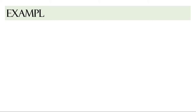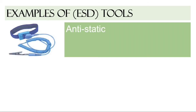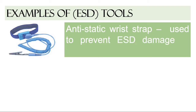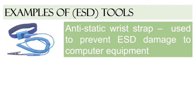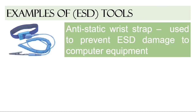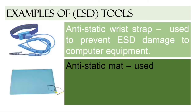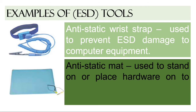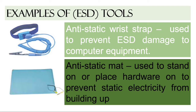Examples of ESD tools are the following. Number 1: anti-static wrist strap — this tool is used to prevent ESD damage to computer equipment. Next: anti-static mat — this tool is used to stand on or place hardware on to prevent static electricity from building up.